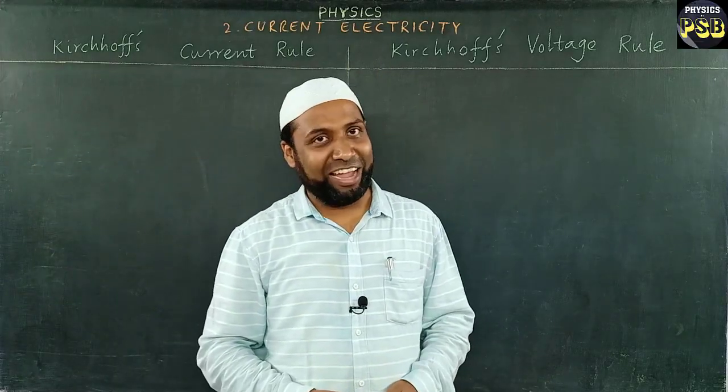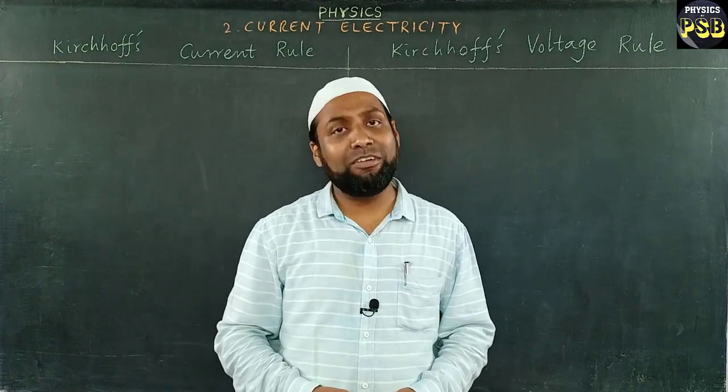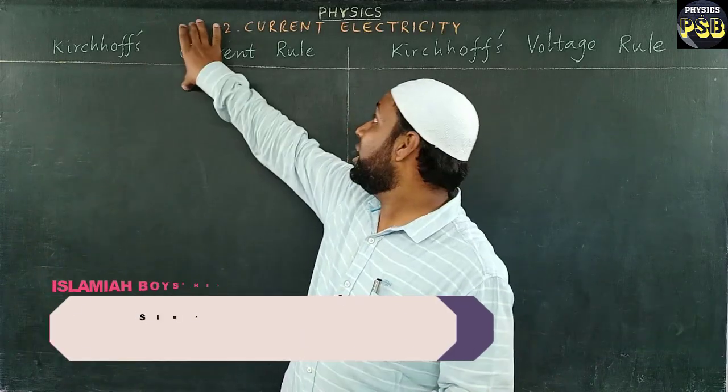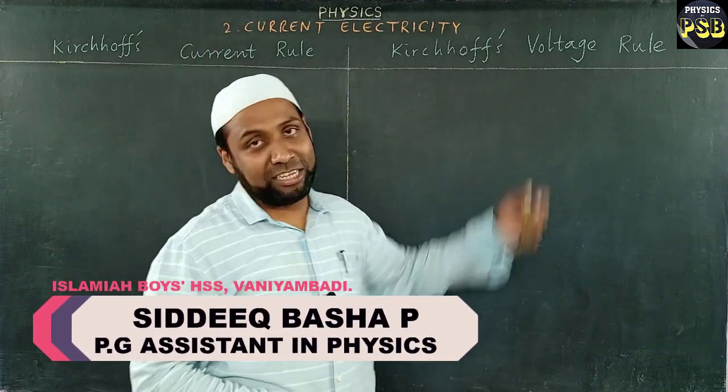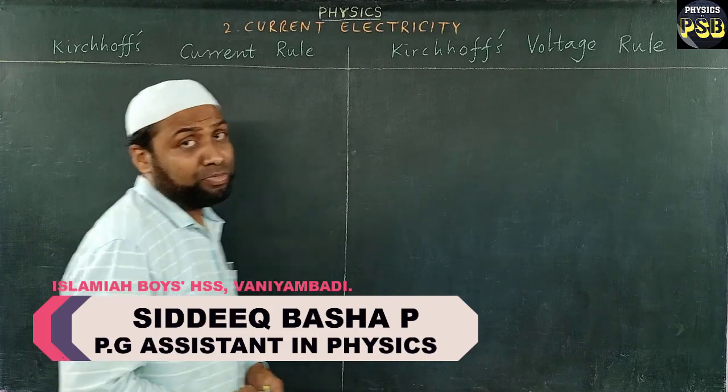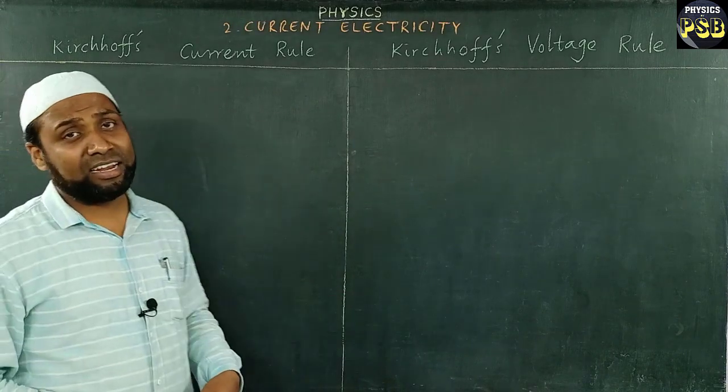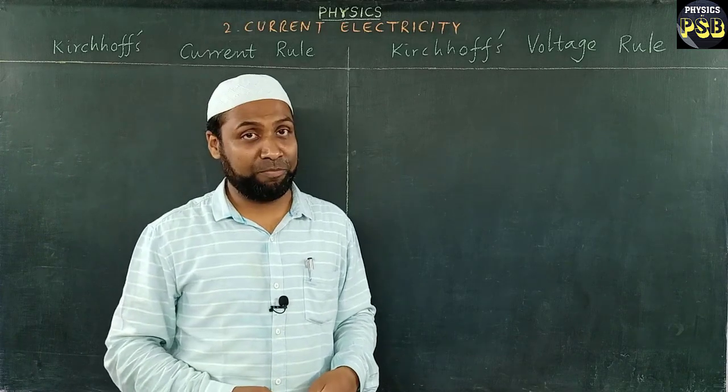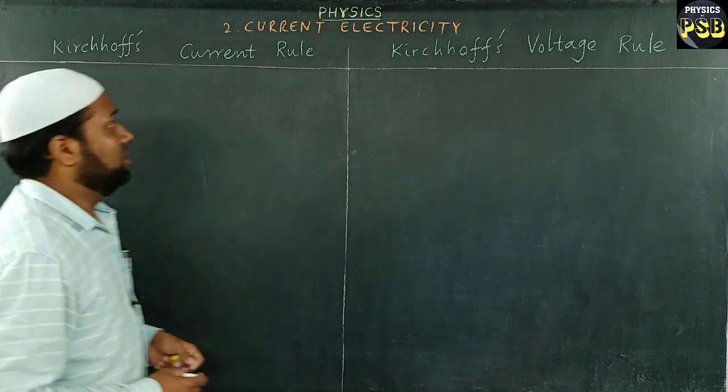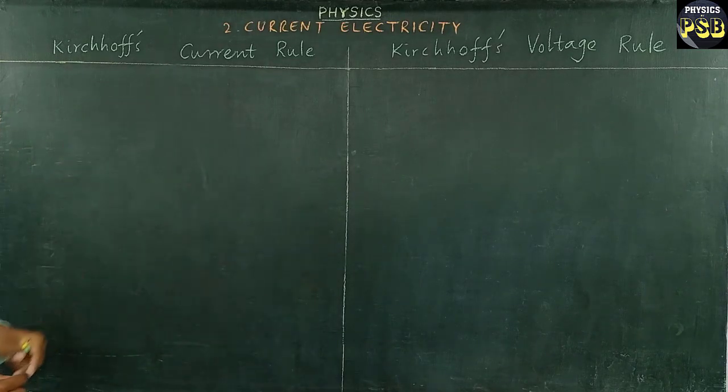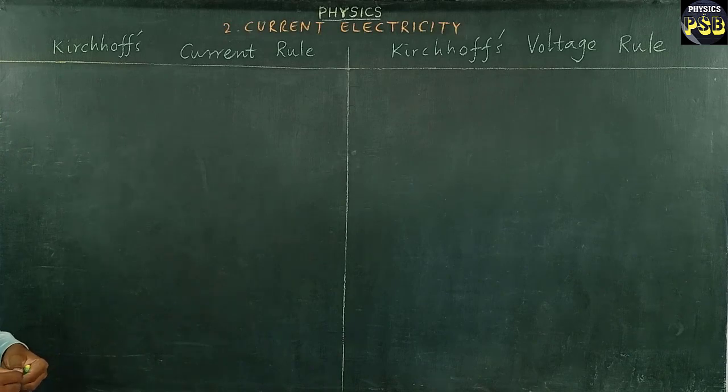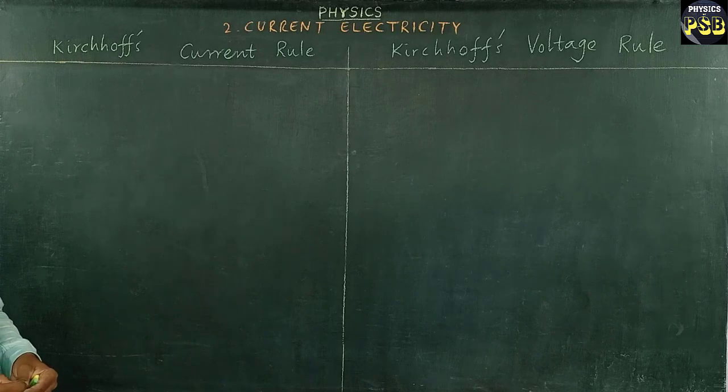Assalamualaikum, hope you are doing fine. In this video we will differentiate Kirchhoff's current rule and voltage rule. We know Kirchhoff's current rule is used to find current in a complex circuit and it says that the sum of current meeting at a junction is zero.